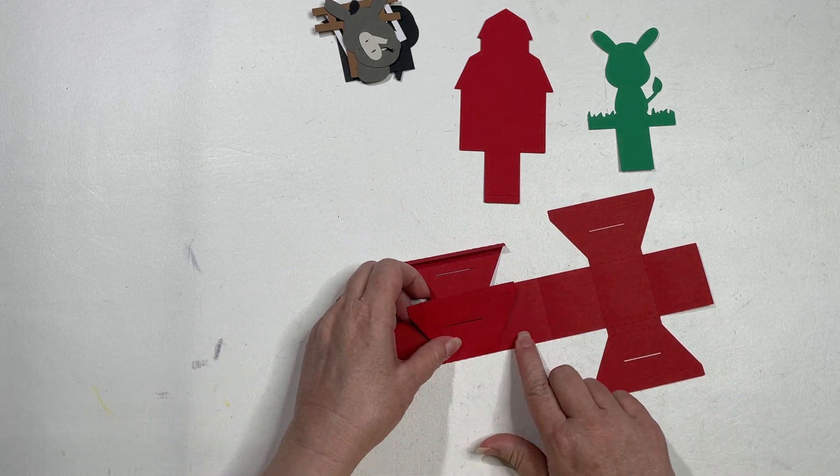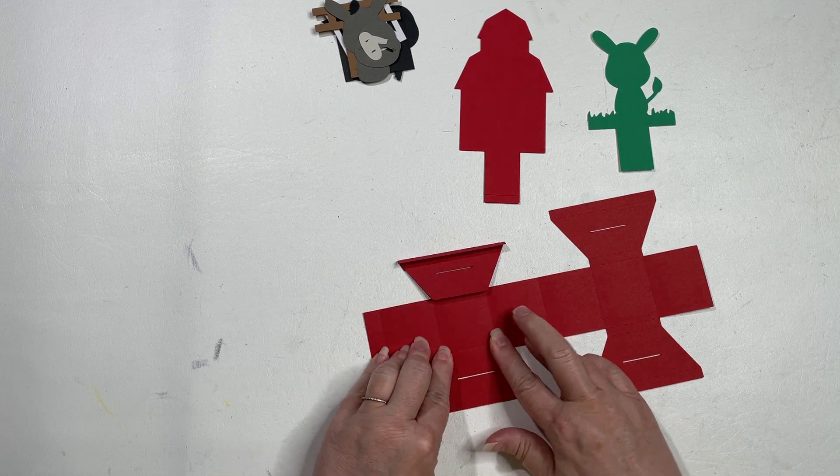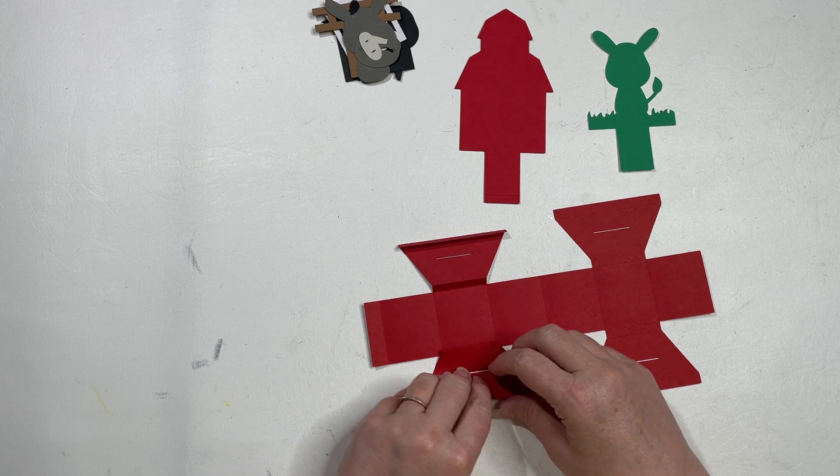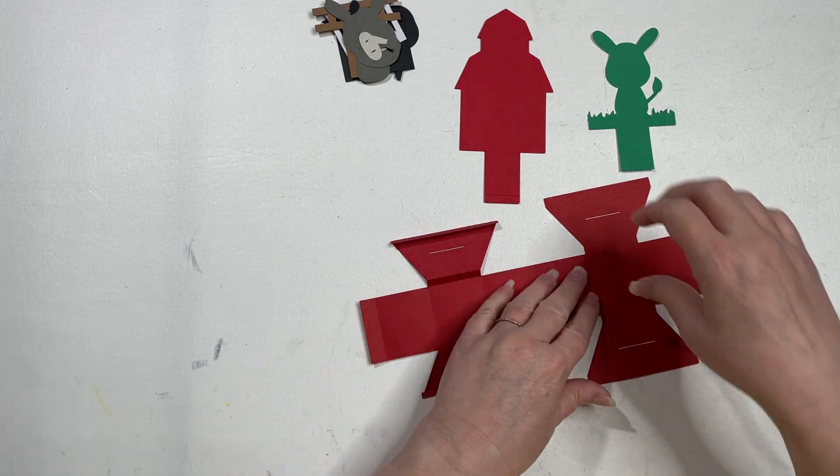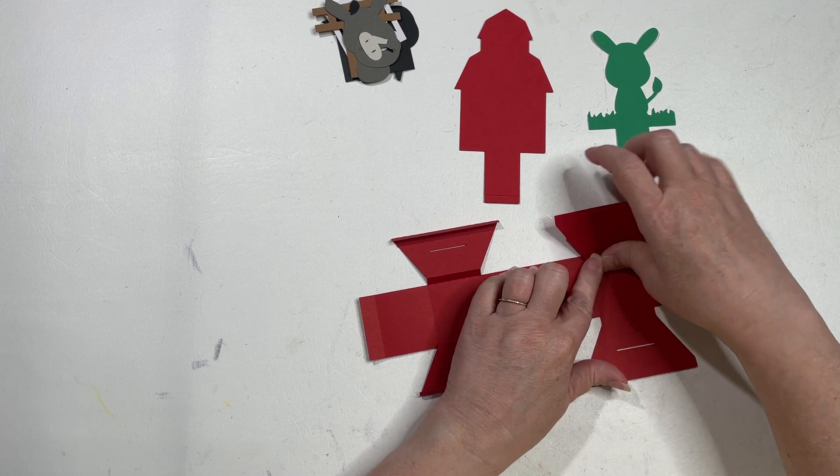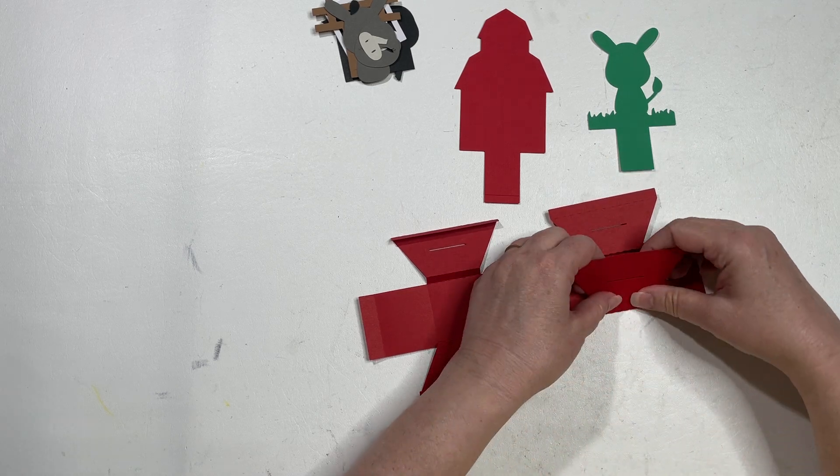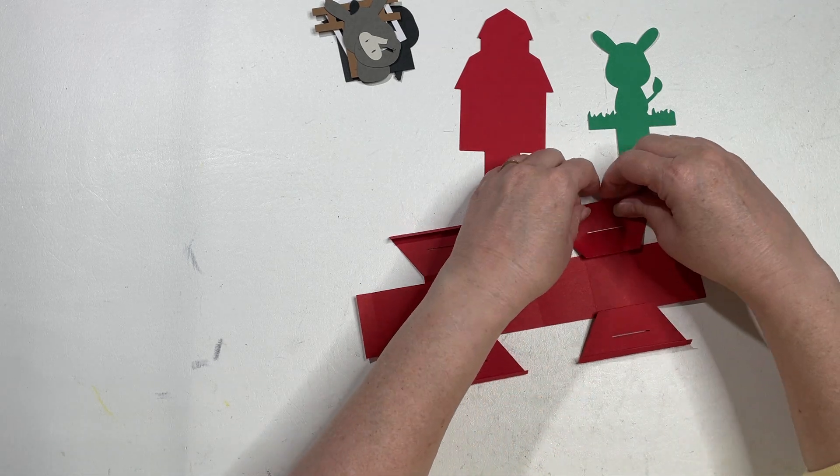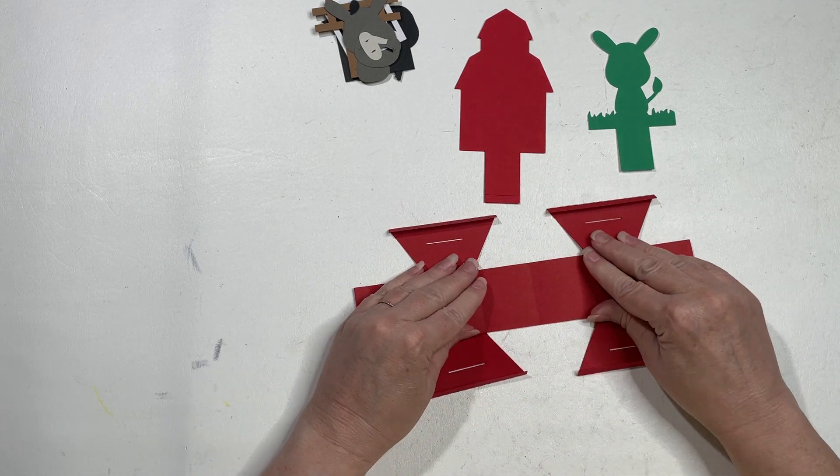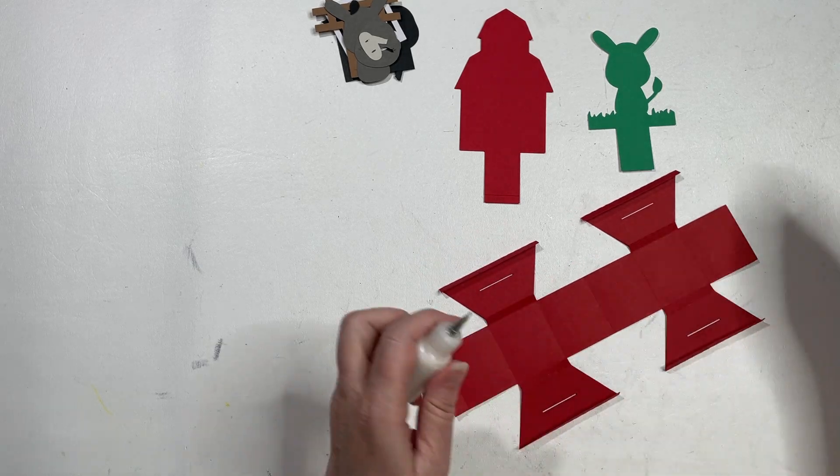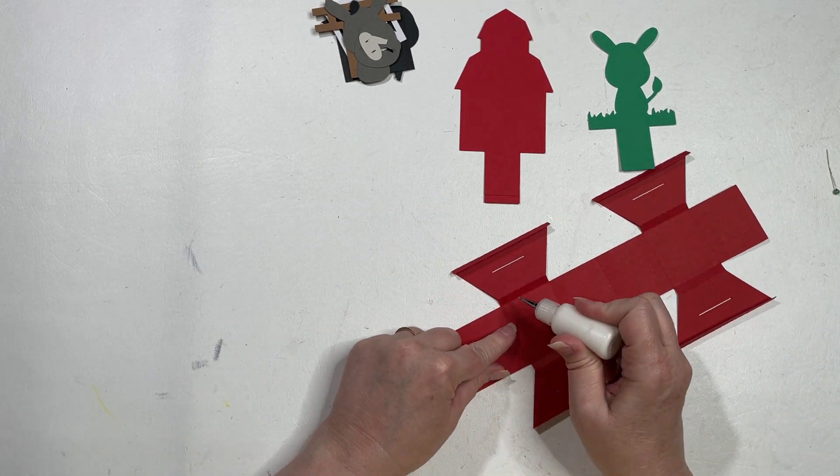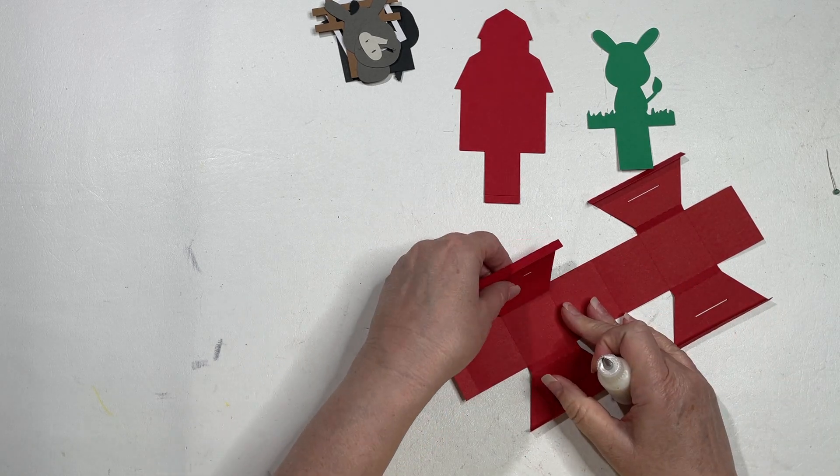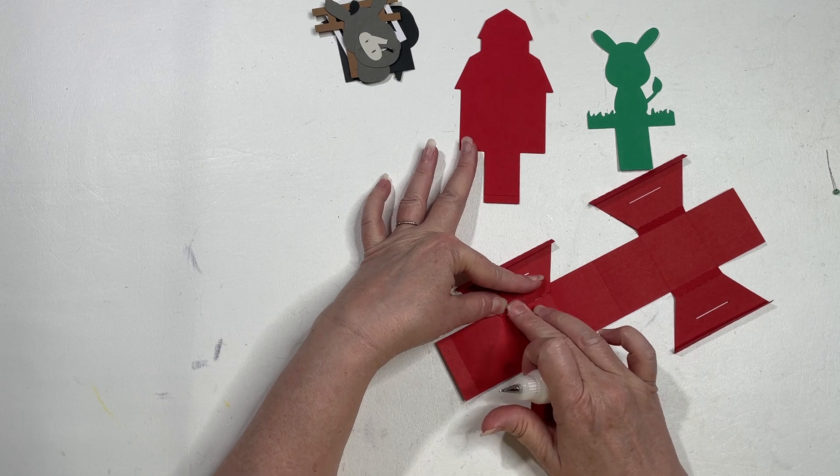We're going to pull down and then fold back towards you to make this little section here that we're going to glue down to the inside. I like to start with this so that it has plenty of time to dry before we need to put the inserts into it. And then this quarter inch space right here, we're just going to glue this down to the inside.